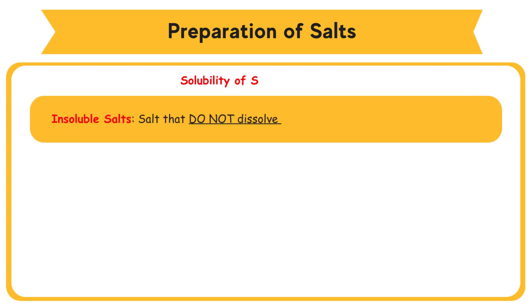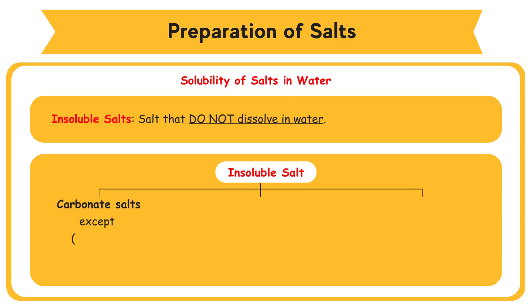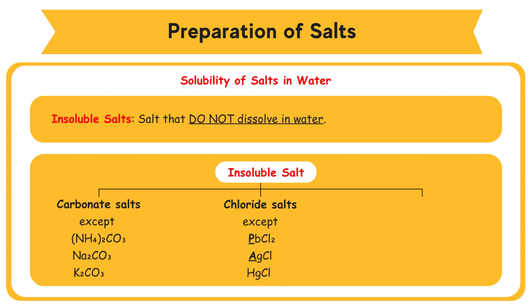Salts that do not dissolve in water are insoluble salts. Examples of insoluble salts — Carbonate Salts, except (NH4)2CO3, Na2CO3, K2CO3. Chloride Salts, except PbCl2, HgCl, AgCl. Sulfate Salts, except PbSO4, BaSO4, CaSO4.